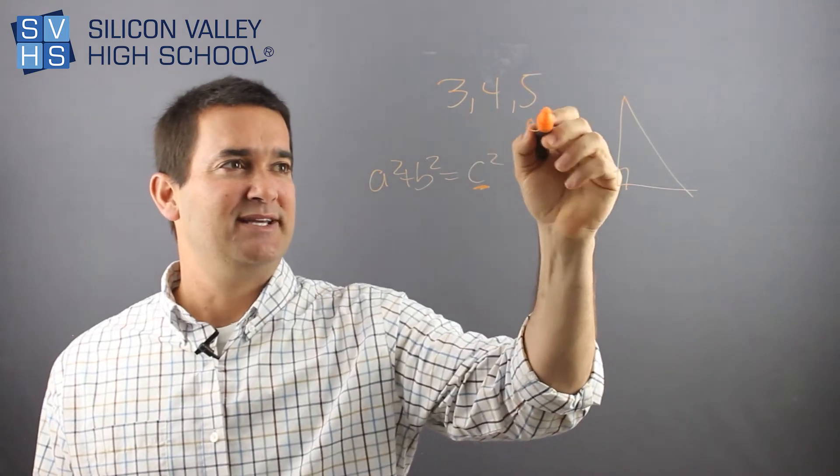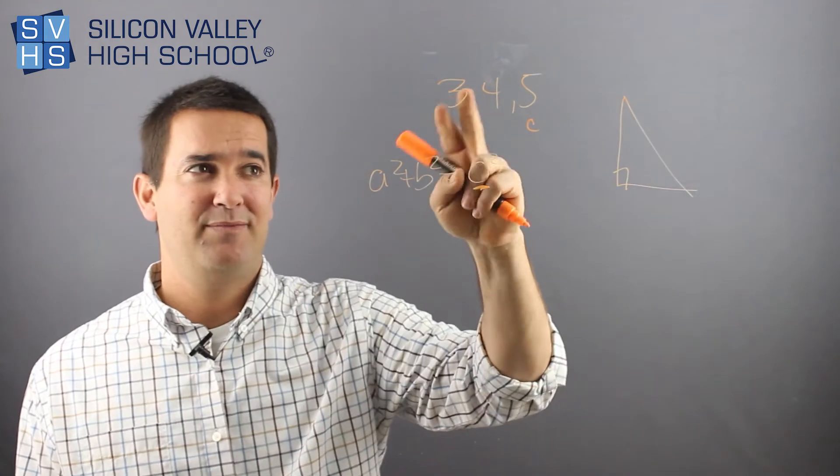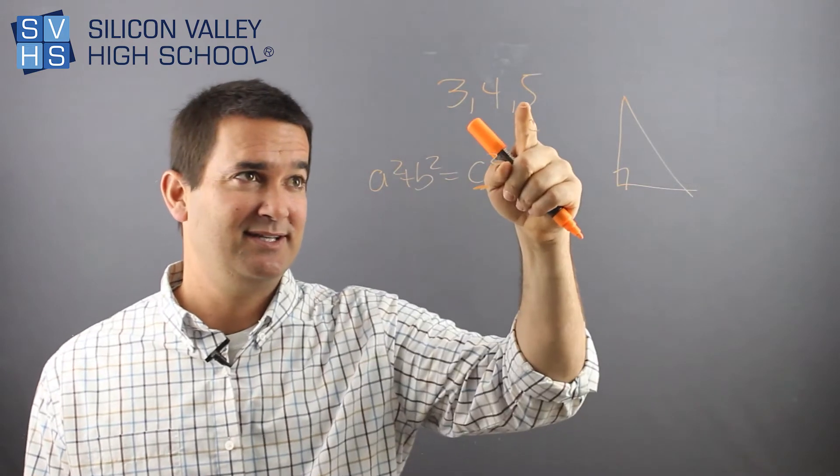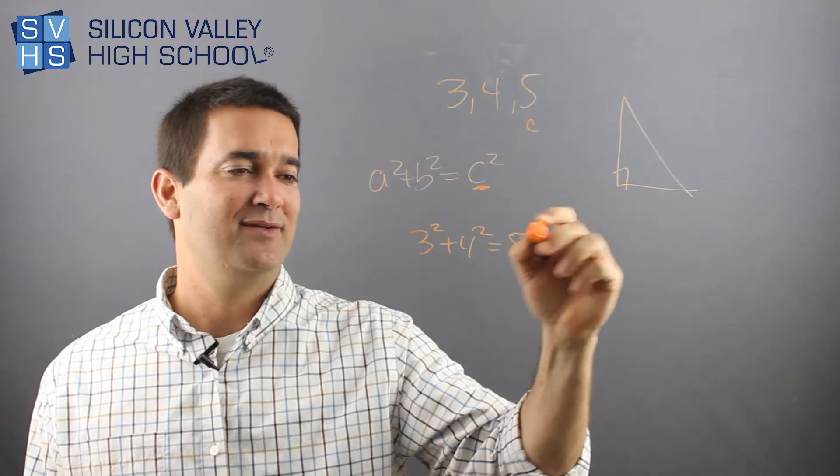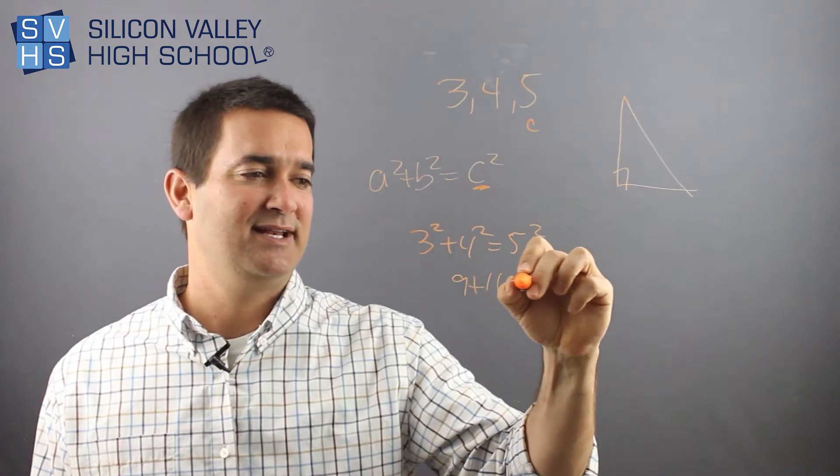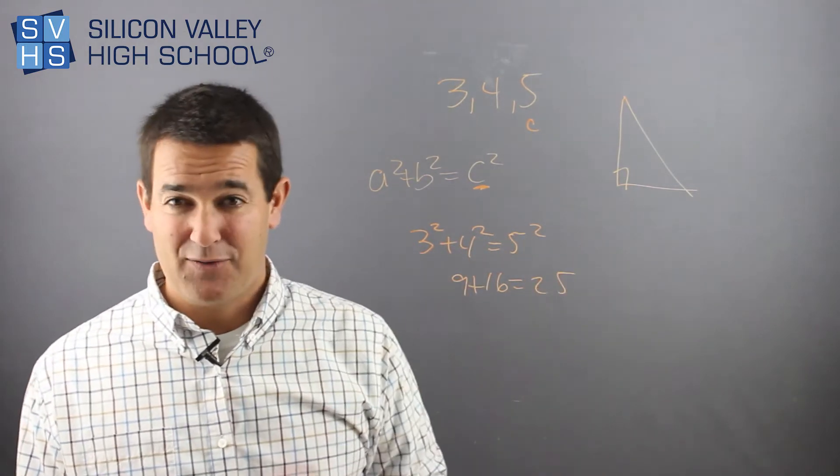So this must be c, because it's the longest. I don't care about a or b, b or a, whatever. That's definitely c. So plugging these in, I would get three squared plus four squared equals five squared, which looks like nine plus 16 equals 25. That totally worked.